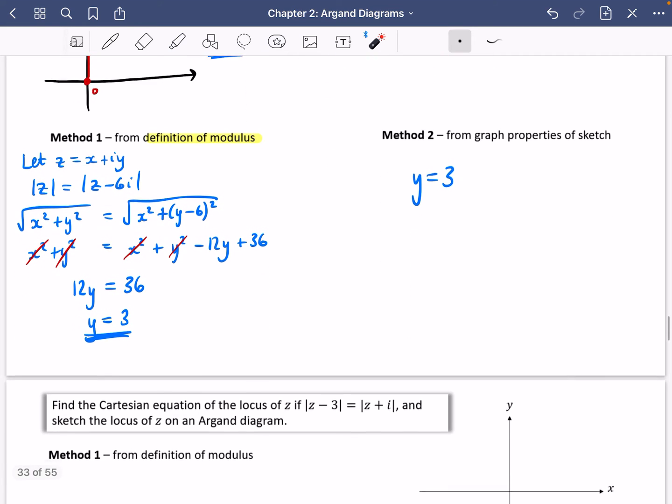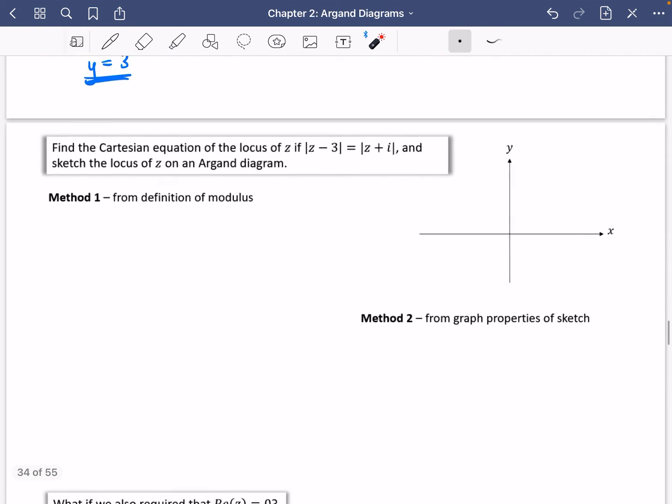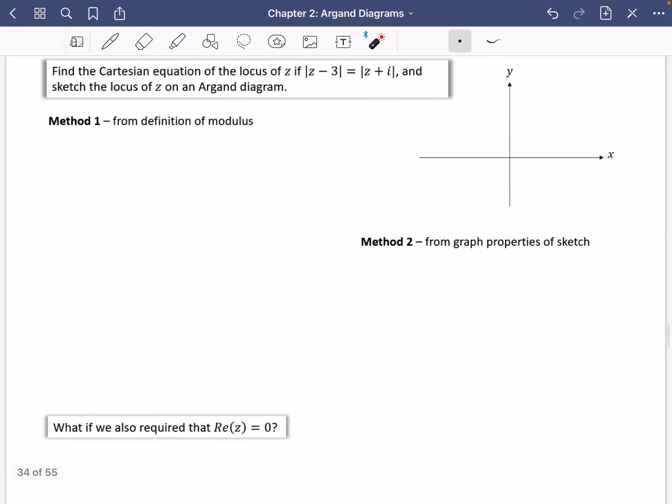Let's try some that are not going to be horizontal lines, some that are perhaps a little bit trickier. So it says here, find the Cartesian equation of the locus of Z if Z minus 3 equals Z plus I, and sketch the locus of Z on an Argand diagram. So I'm going to do the first one without doing the sketch. Really, what I would recommend is doing the sketch and probably going with method 2, but I want to show you that method 1 is going to work here.